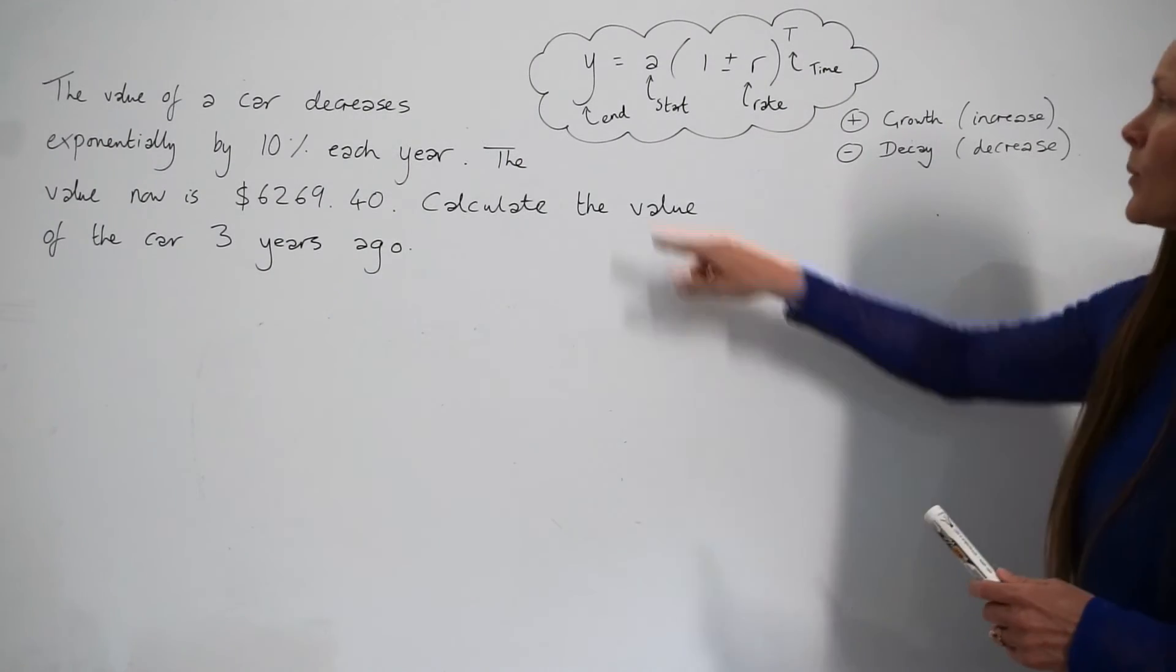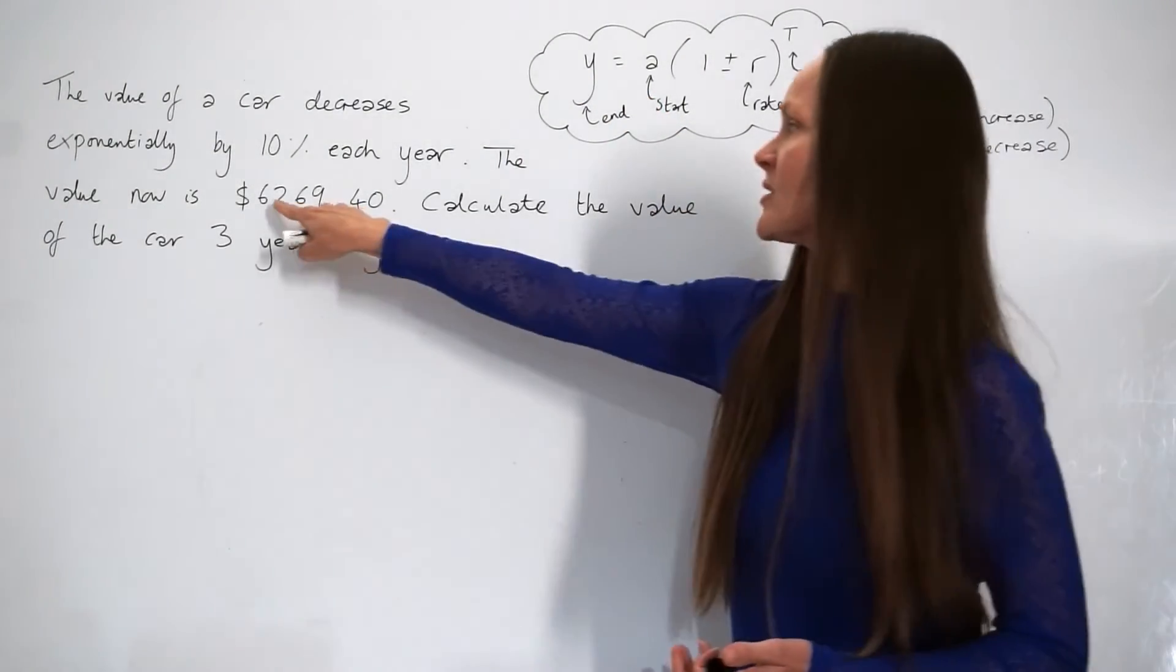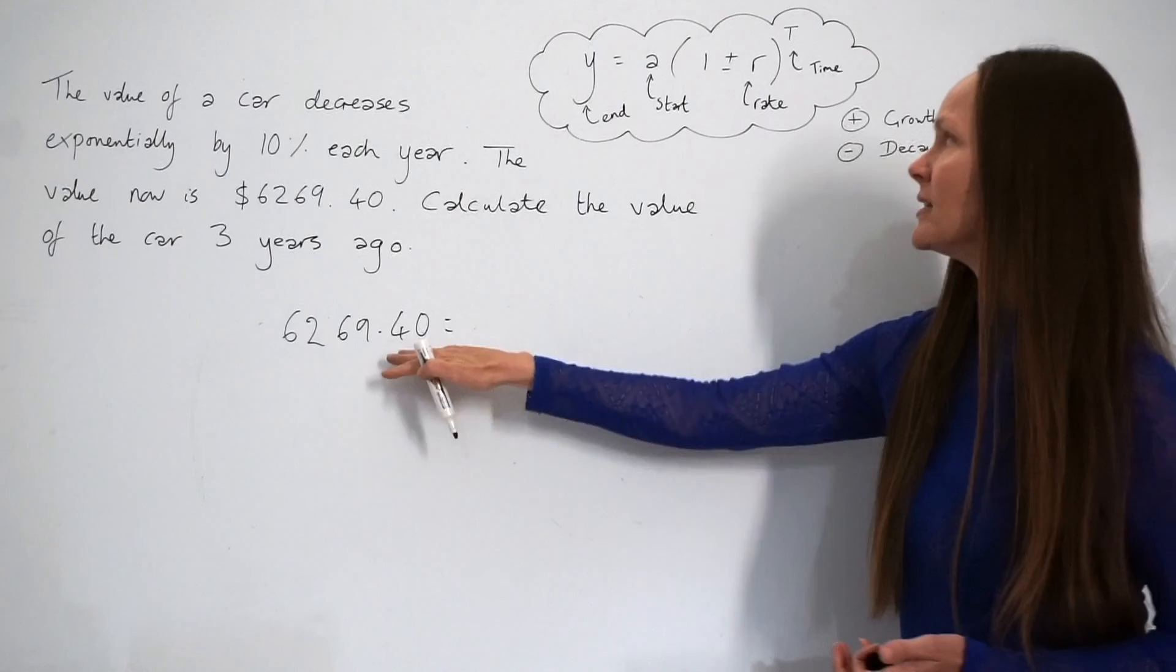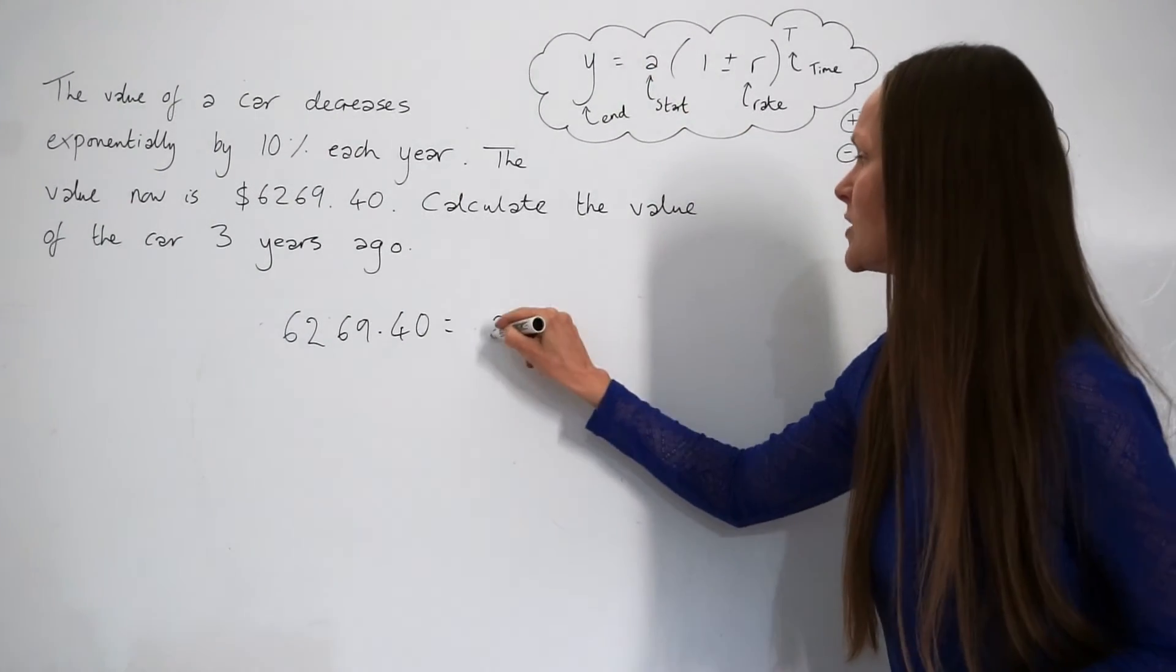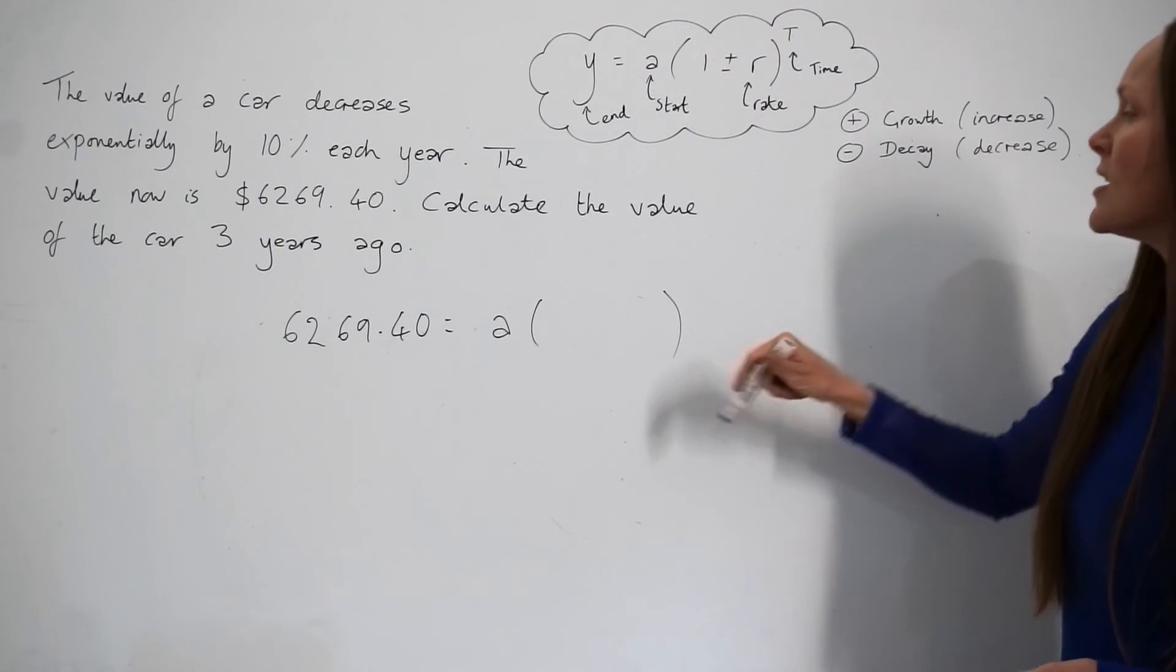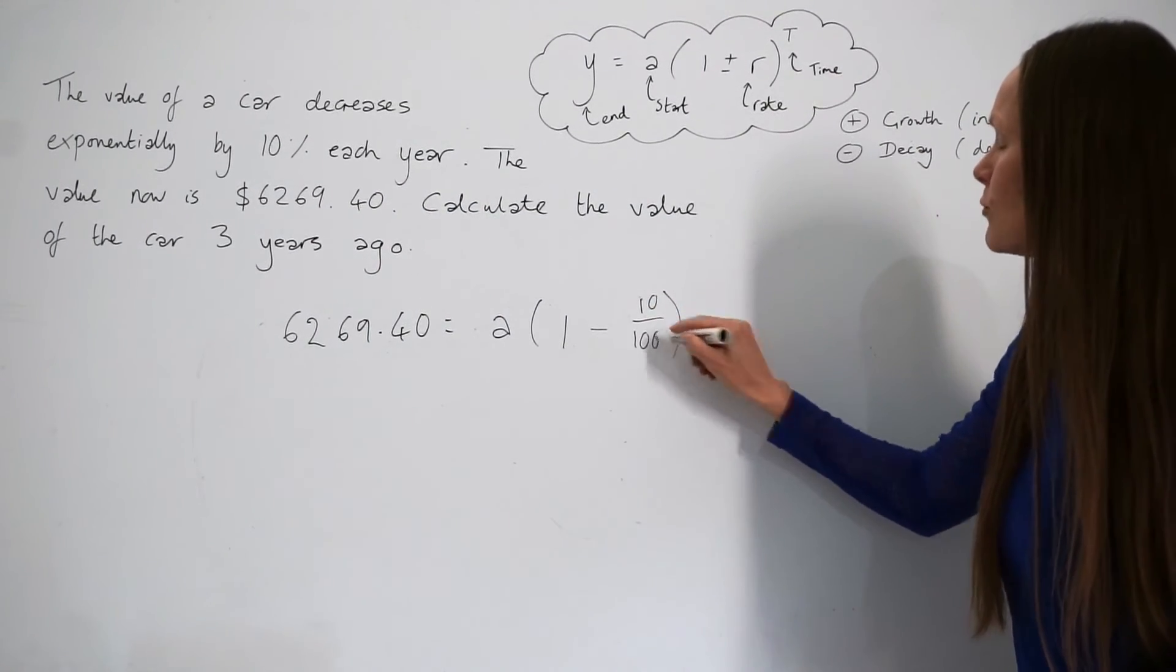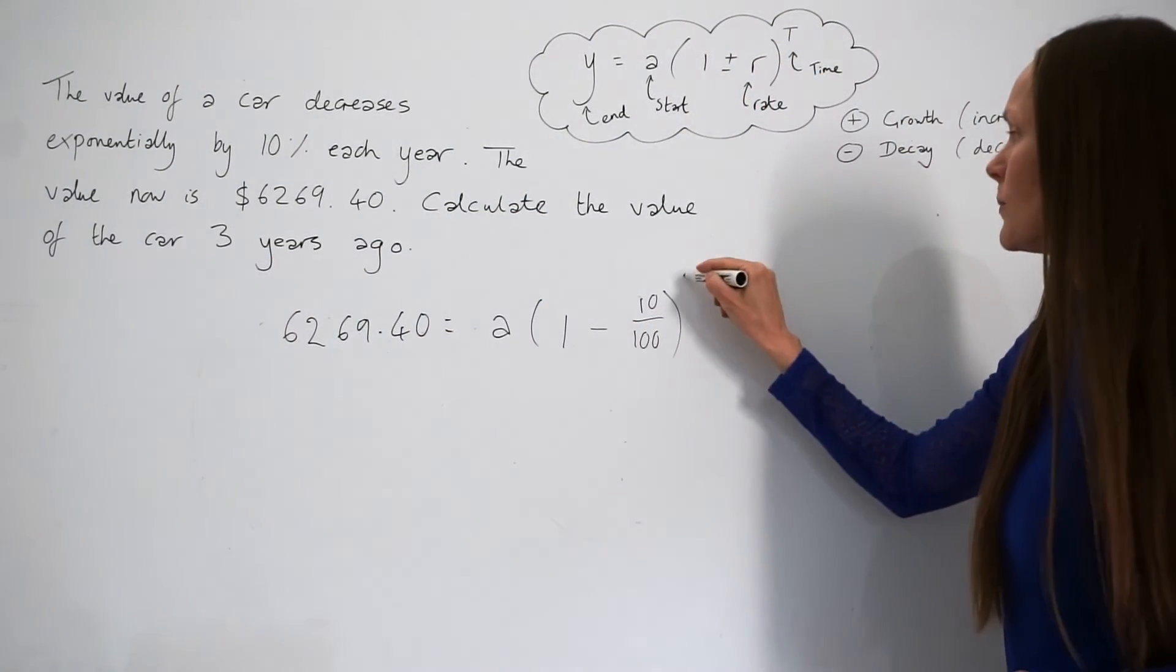So you need to begin with writing down the end value y. So that's the value of the car now. So 6,269.40. So start by writing down the end value. Remember, this is equal to a, the start value that we need to work out, multiplied by 1 minus the percentage rate. So in this question, it's 1 minus 10%. So 10 out of 100, raising to the power of t, which is 3, because it's 3 years ago.